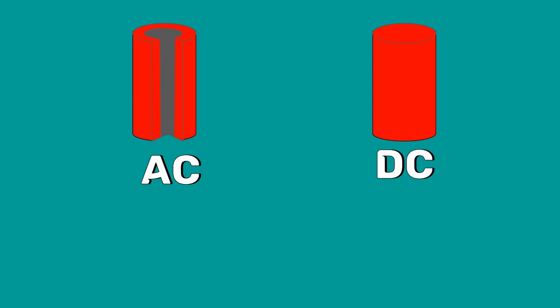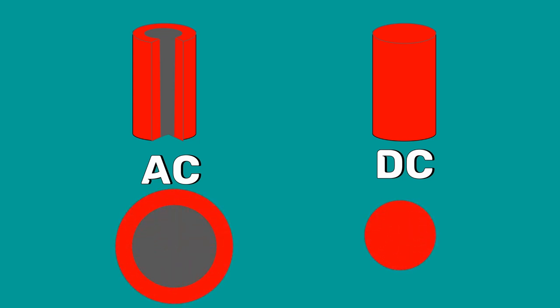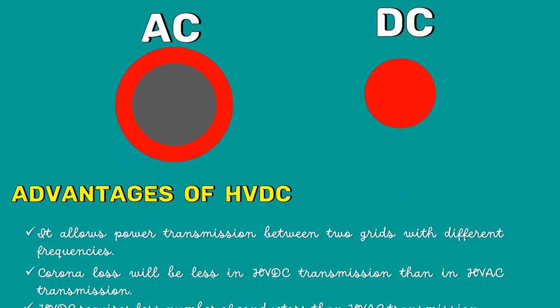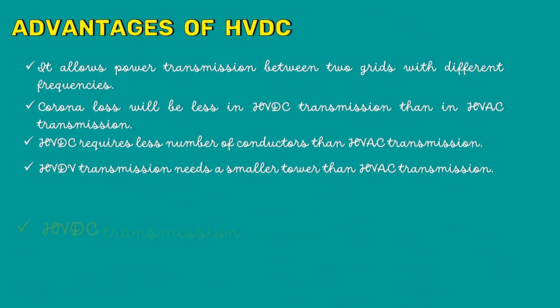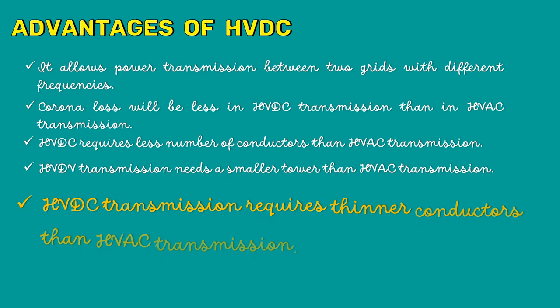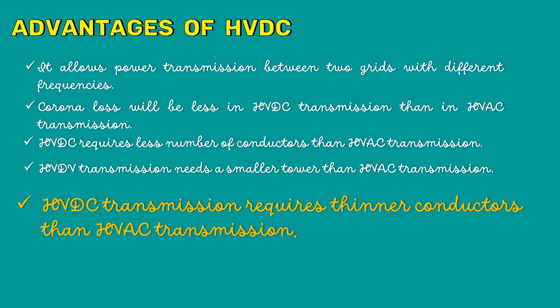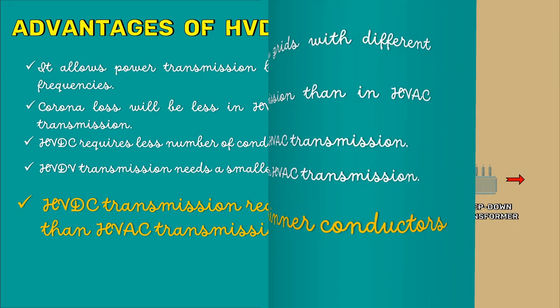For the same amount of current to transmit, AC transmission requires a conductor with a larger diameter. This means HVDC transmission requires thinner conductors than HVAC transmission, which again reduces the cost of HVDC transmission.